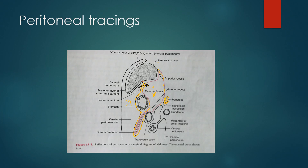Anteriorly the epiploic foramen is bounded by the porta hepatis — that is, the common bile duct, portal vein, and hepatic artery. Posteriorly it is bounded by the inferior vena cava, superiorly by the liver, and inferiorly by the duodenum. Then this part of the peritoneum covers the transverse colon and goes posteriorly to form the transverse mesocolon, and then it continues lower down, covering the duodenum and forming another mesentery.